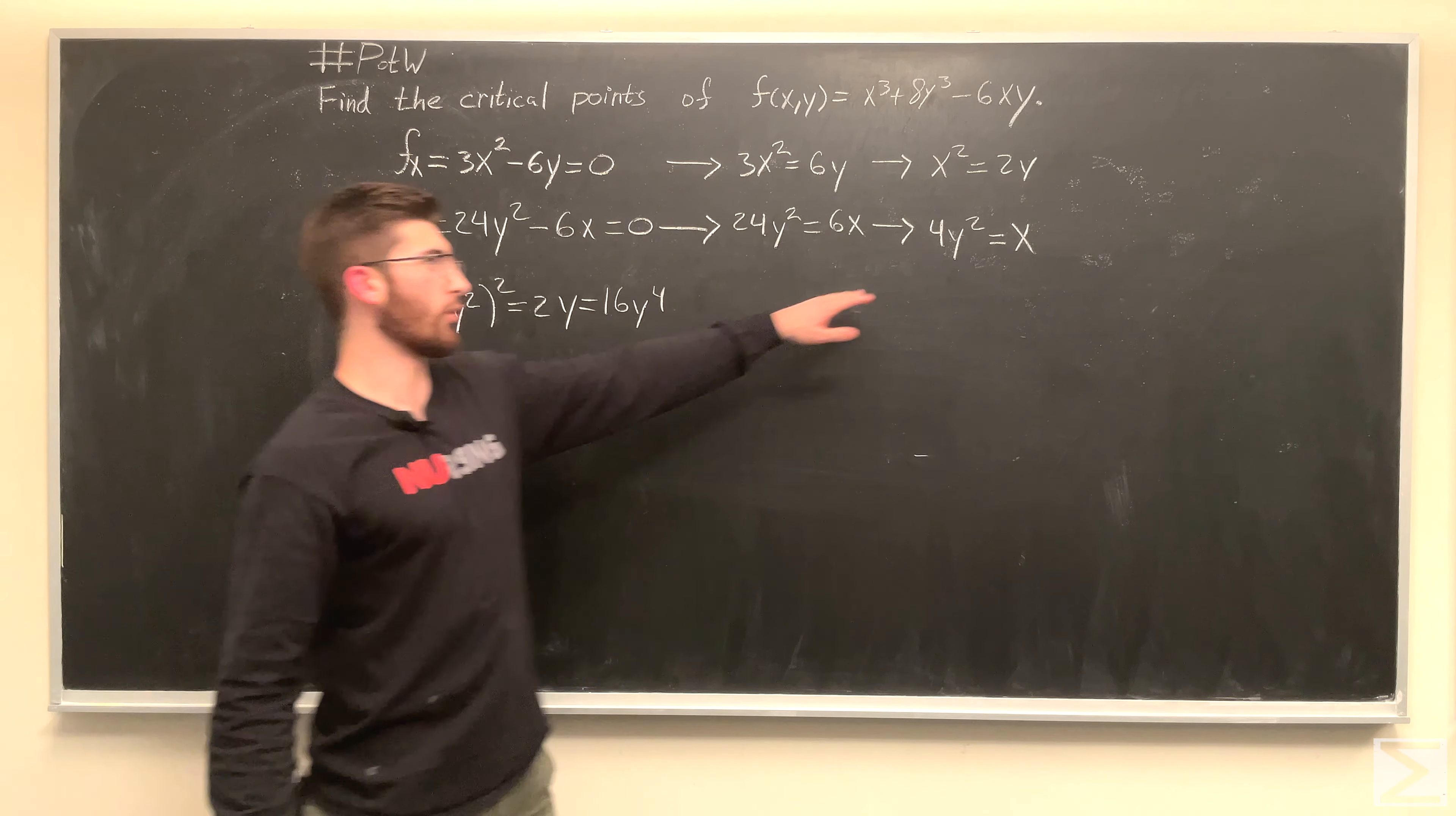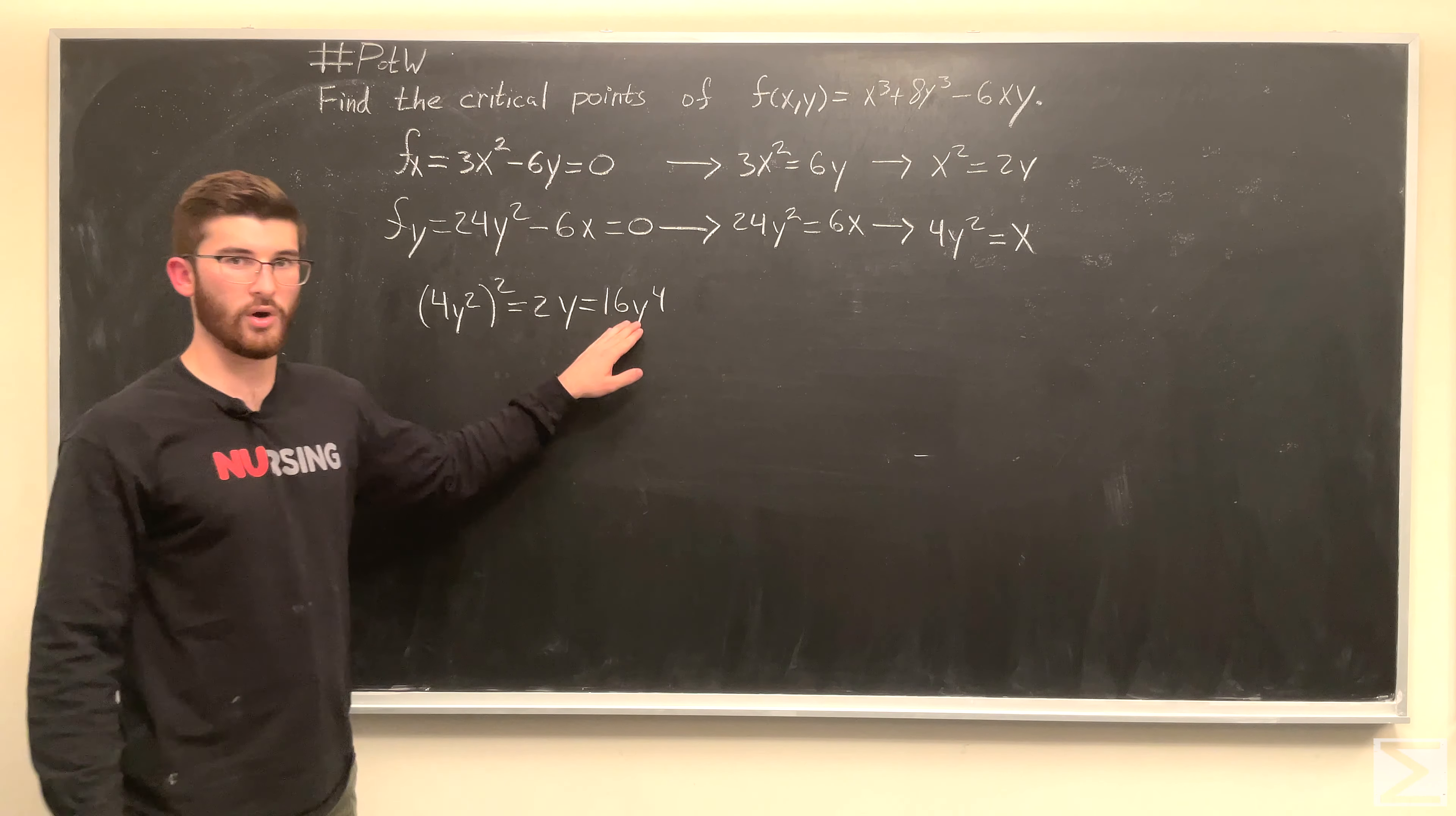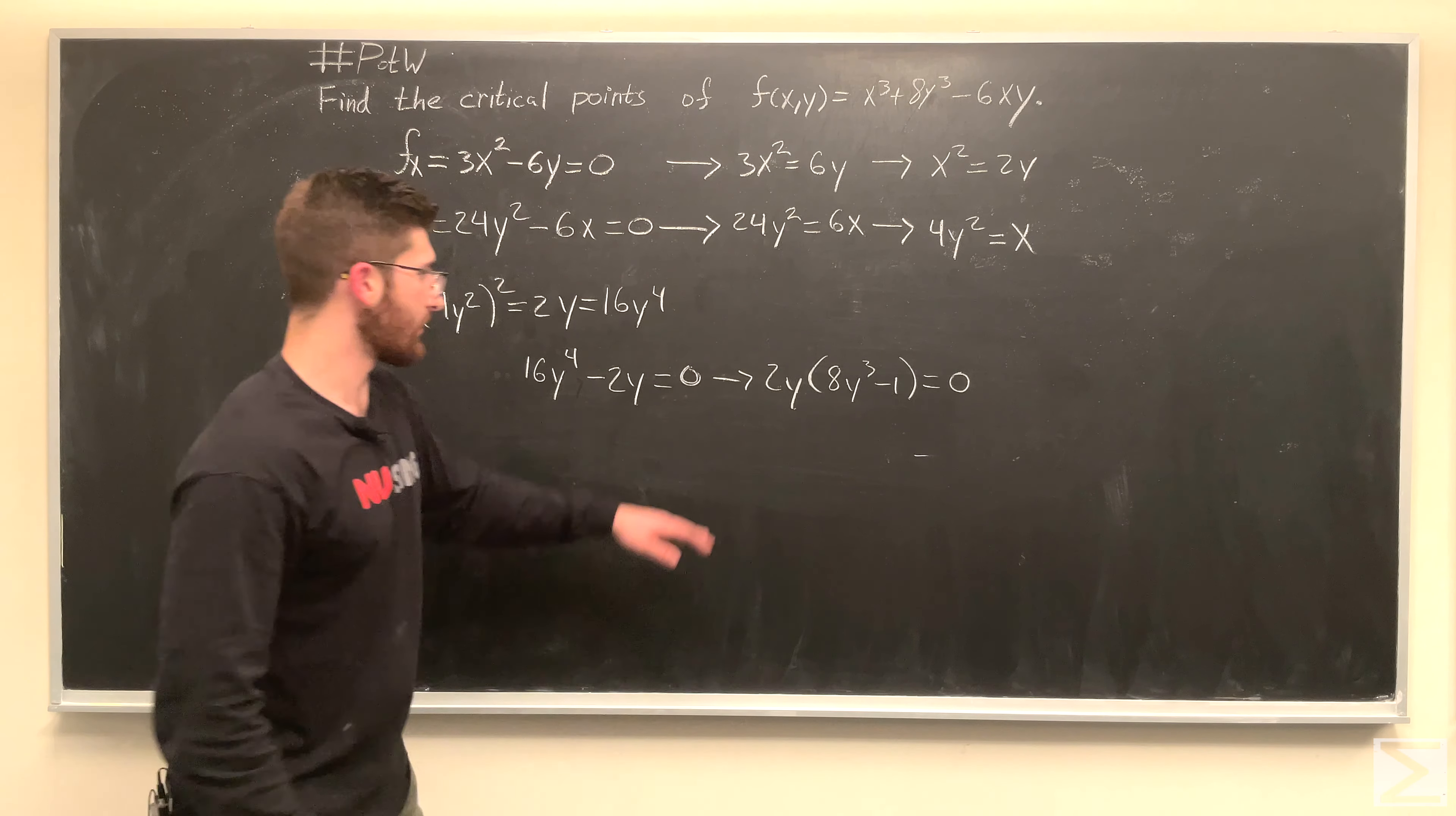So, if 4y squared equals x, then 4y squared is equal to 2y. So, then 2y equals 16y to the 4th. So, let's go ahead and keep solving.